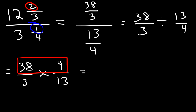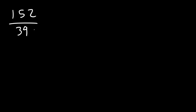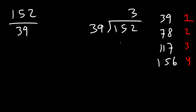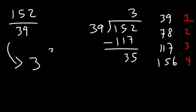38 times 4 is 152, and 3 times 13: 3 times 10 is 30, 3 times 3 is 9, so that's 39. We have 152 over 39. Using long division: 39 times 2 is 78, times 3 is 117, times 4 is 156 which exceeds 152, so 39 goes into 152 three times. 39 times 3 is 117, and 152 minus 117 is 35. So this is equal to 3 and 35 over 39.